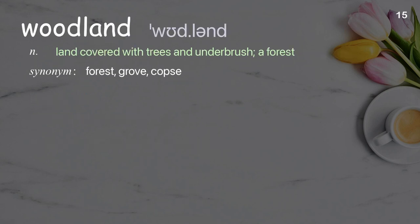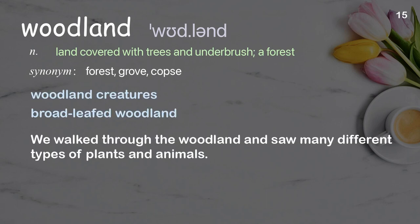Woodland: Land covered with trees and underbrush; a forest. Examples: Woodland creatures, Broadleafed woodland. We walked through the woodland and saw many different types of plants and animals.